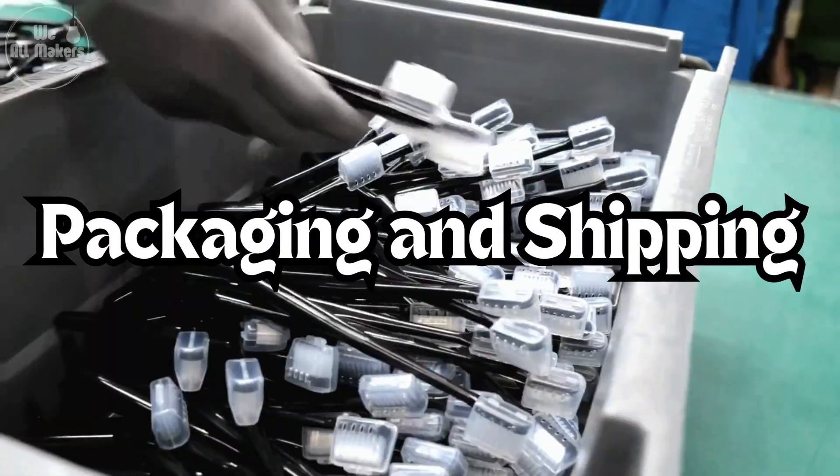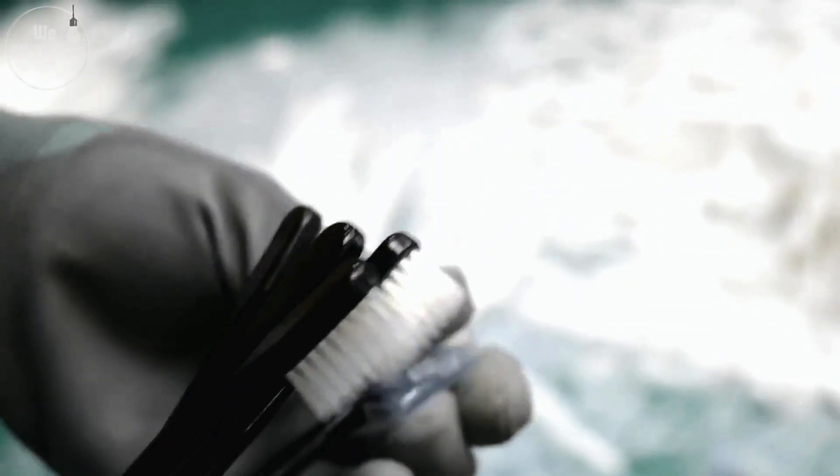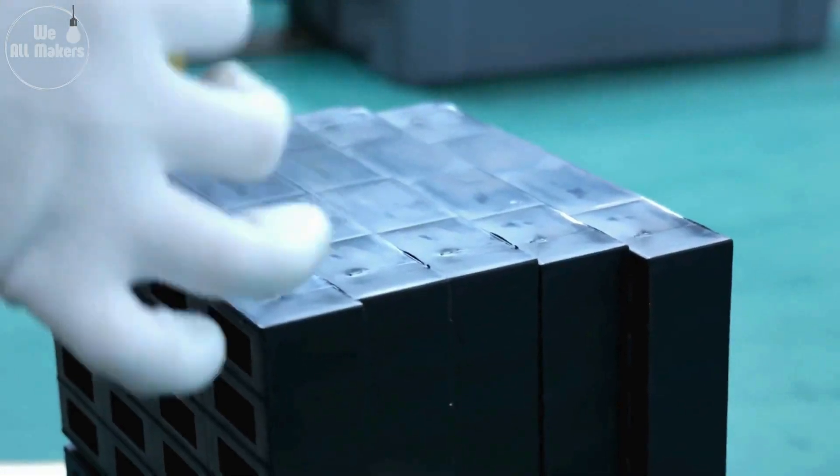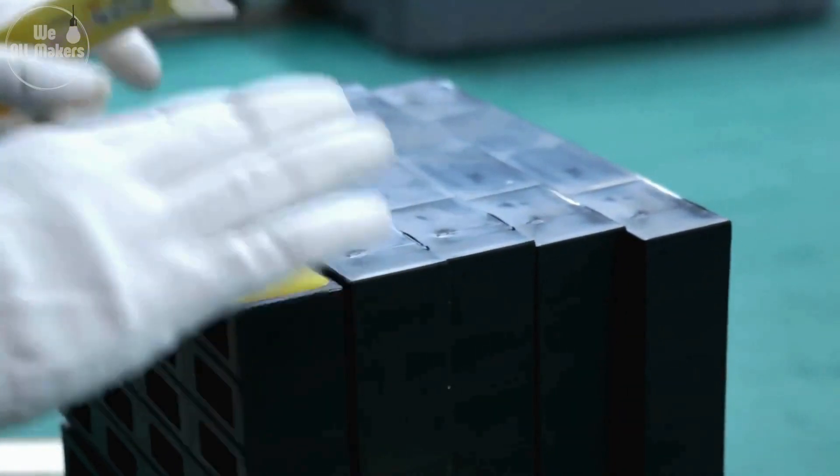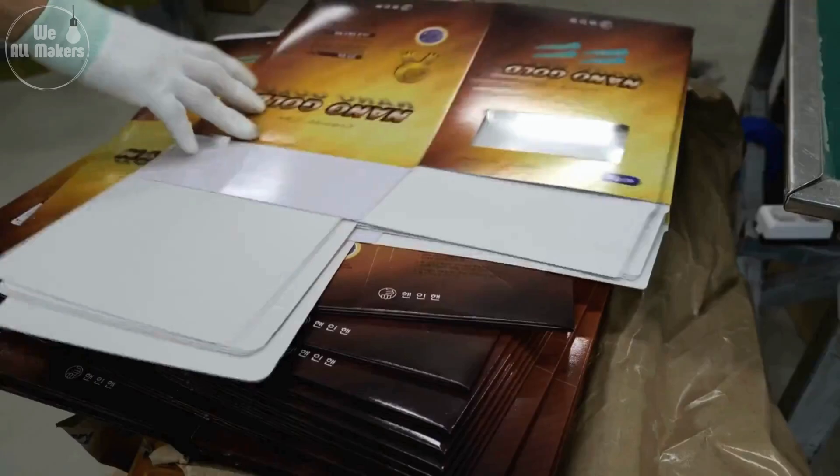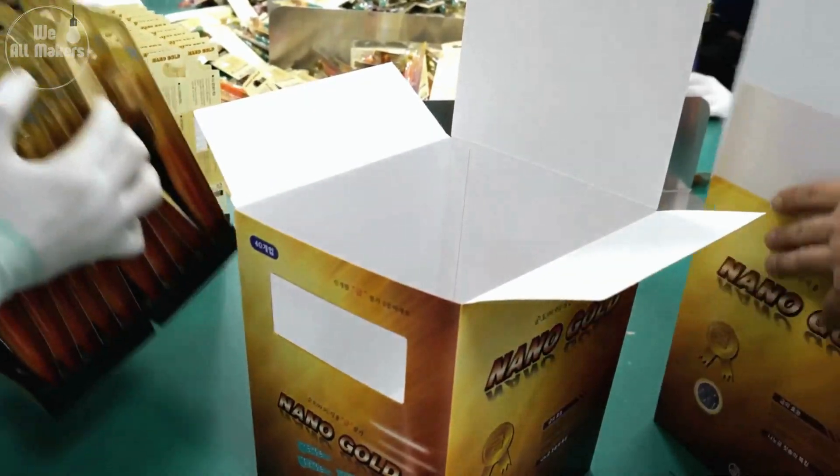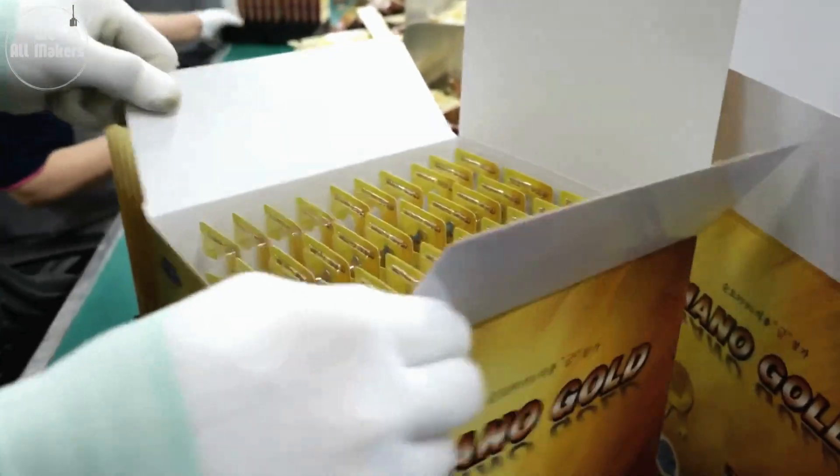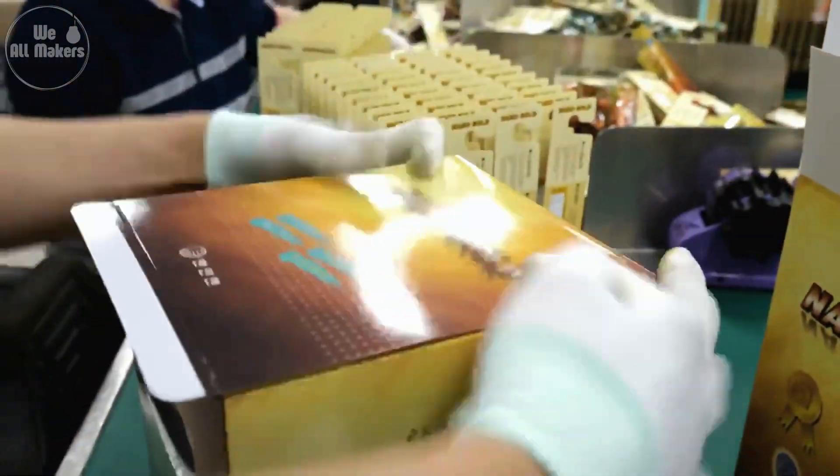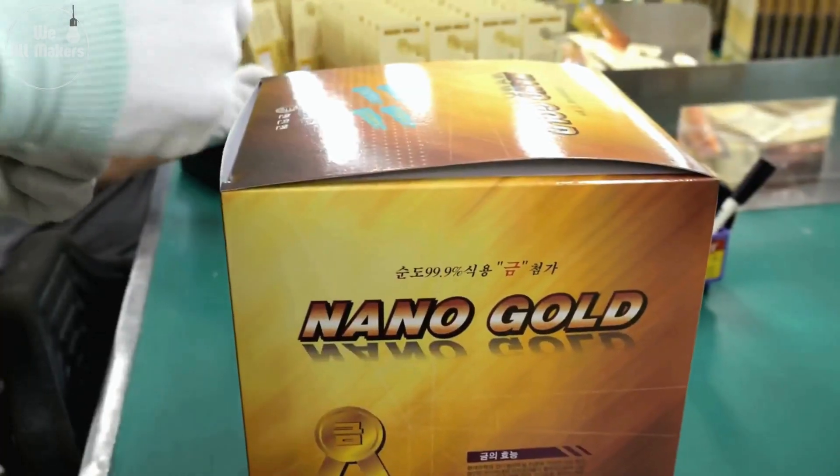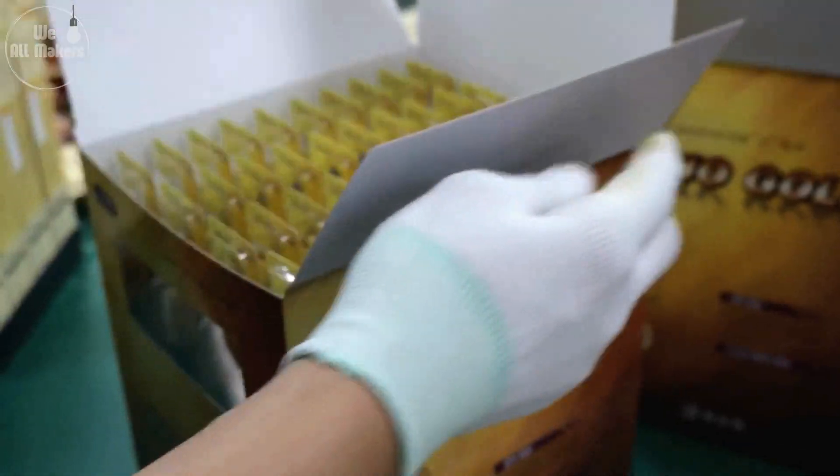Step 8: Packaging and Shipping. Finally, the toothbrushes are packaged and sent out to stores. The packaging keeps them clean and protected until you're ready to use them. Some companies even use eco-friendly packaging, which is better for the planet. After packaging, they're shipped out, ready to land in your bathroom and start their job of keeping your teeth clean.